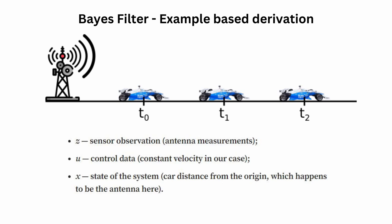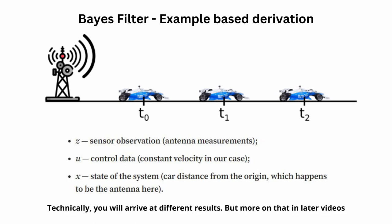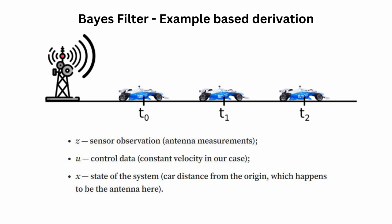In many examples, you will see that the system state includes both position and velocity of a mobile robot. In that case, control data U can be acceleration. In our example, if the system state includes both position and velocity, U will be zero because the assumption of constant velocity says you have no acceleration at all. But even if you say your system state is only position and velocity is part of your control data, you will arrive at the same results — the same model behavior.